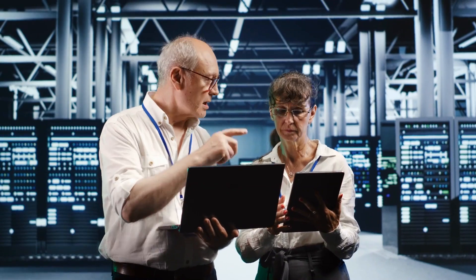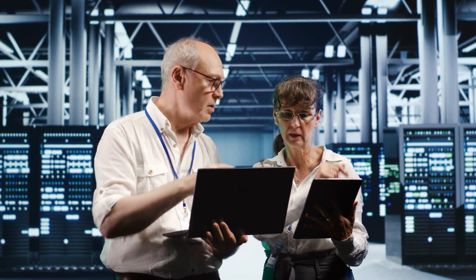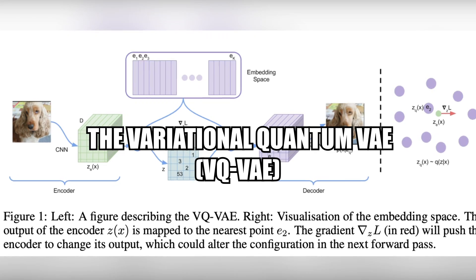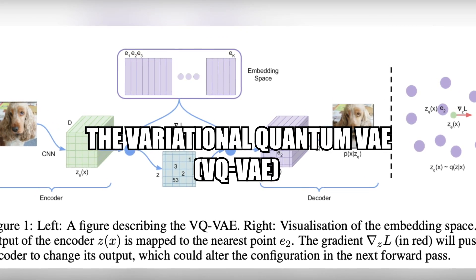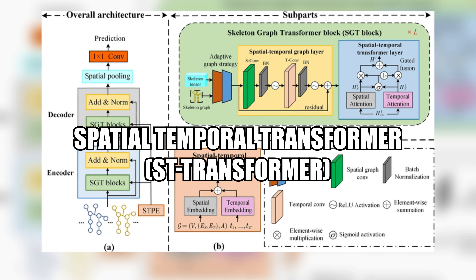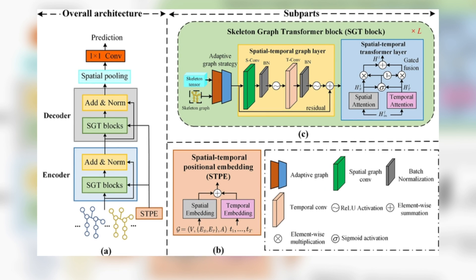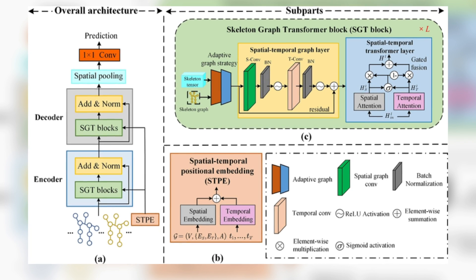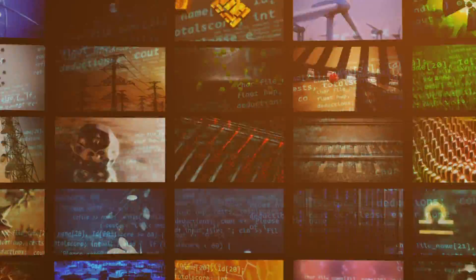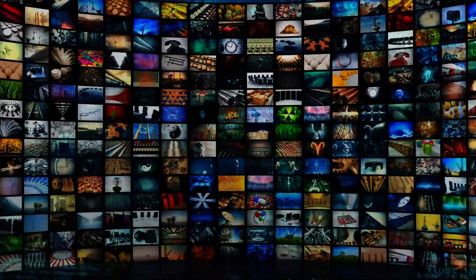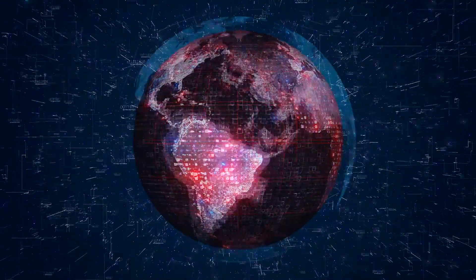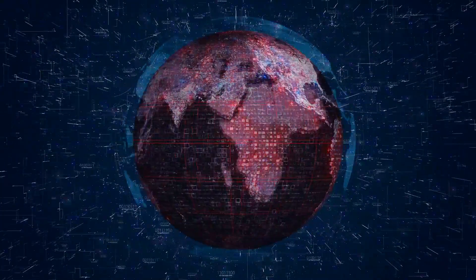Genie's impressive performance is due to its use of cutting-edge technology. The Variational Autoencoder VAE model and the Spatial Temporal Transformer architecture allow the model to balance efficiency and capacity, which is important for working with complex video data. The result is a realistic and engaging virtual world.